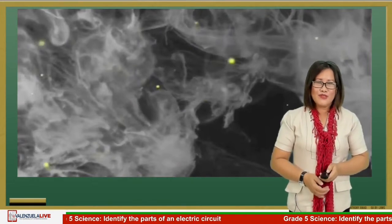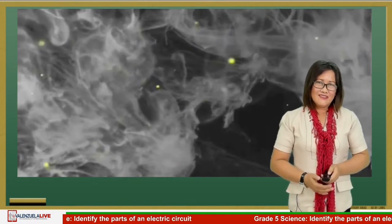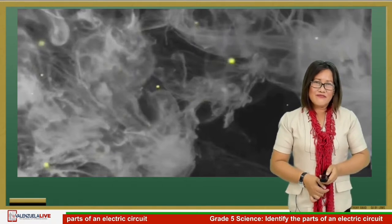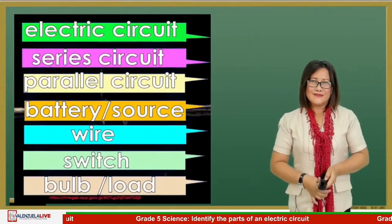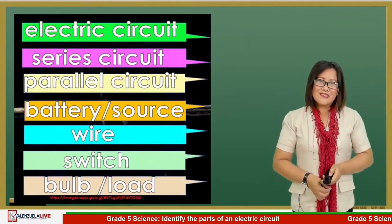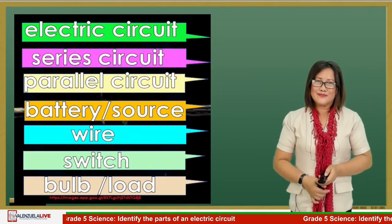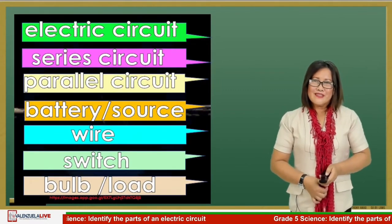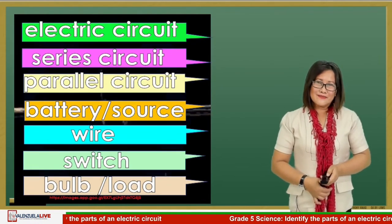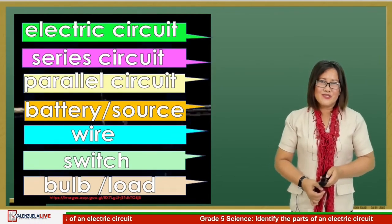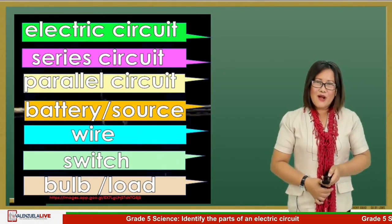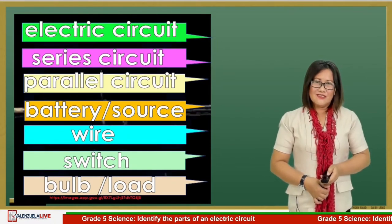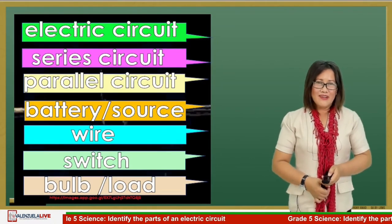You were able to write important words. Let us read the words — follow after me. Ready, go. Electric circuit. Series circuit. Parallel circuit. Battery or source. Wire. Switch. Bulb or the load.